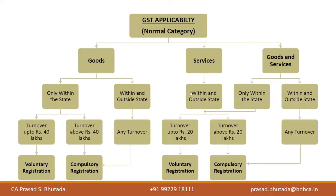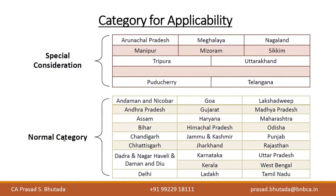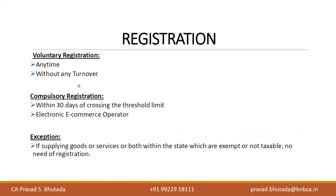The 40 lakhs and 20 lakhs limits apply to normal category states, which cover most states. Special category limits apply mostly to northeastern region states, plus Puducherry, Telangana, and Uttarakhand. For voluntary registration, you can apply at any time regardless of turnover — even if your turnover is zero and you are still searching for clients. For compulsory registration, once you cross the applicable threshold you must register within 30 days.